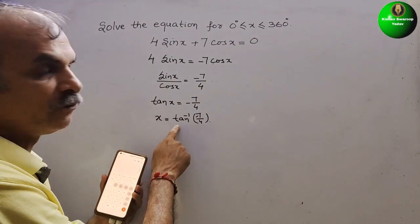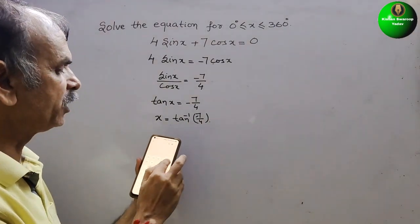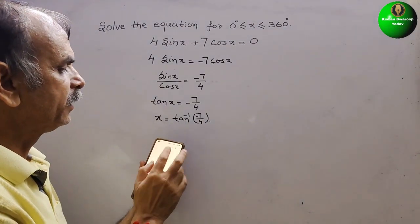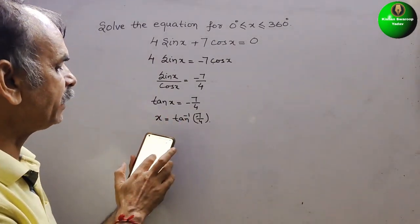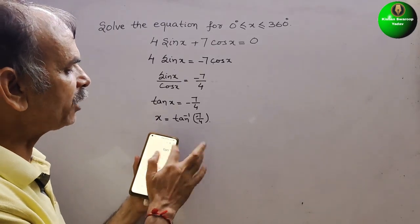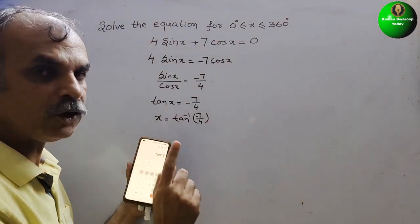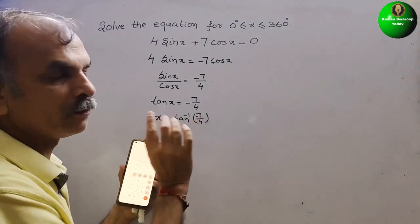Second, we have to select inverse. Inverse is there. Next, we have to press tan inverse. So tan inverse is here. Bracket will get open. There you have to write minus 7 by 4.